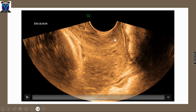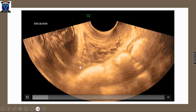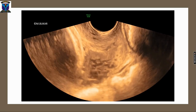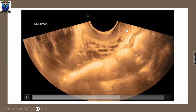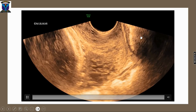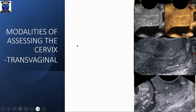This is a transvaginal image. Look at the quality — you can clearly see the anterior lip, posterior lip, vagina, external os, internal os, cervical canal, and cervical mucosa. Here is the presenting part. This video also demonstrates the cervical sliding sign, which is not present in this case. These additional transvaginal images clearly outline the anterior wall, posterior wall, external os, internal os, cervical mucosa, vagina, posterior fornix.